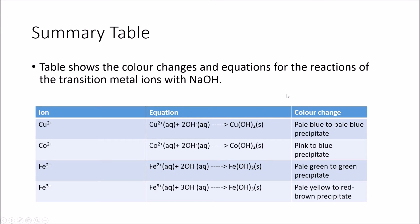To summarise: you need to learn the ionic equations for each of these four transition metal ions — Co2+, Cu2+, Fe2+, and Fe3+ — when they react with sodium hydroxide, which provides OH- ions when dissolved in water. You also need to learn the accompanying colour changes for each.